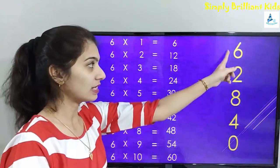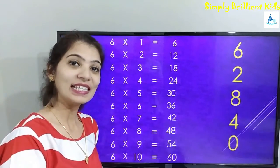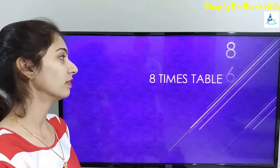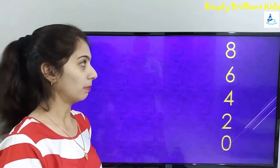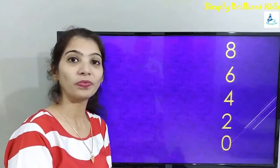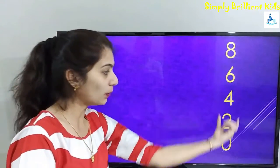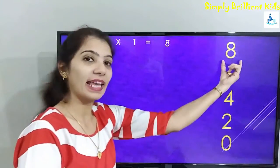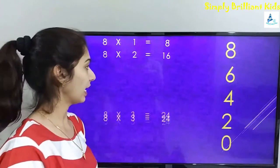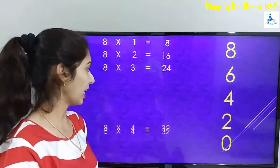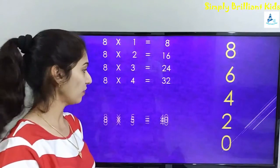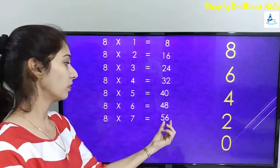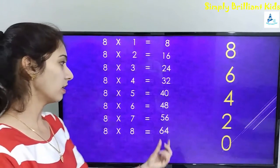Now let's learn eight times table. Here you need to remember the series: 8, 6, 4, 2, 0. That is the descending order of the even numbers. Eight ones are eight, eight twos are sixteen, eight threes are twenty-four, eight fours are thirty-two, eight fives are forty, eight sixes are forty-eight, eight sevens are fifty-six, eight eights are sixty-four, eight nines are seventy-two, eight tens are eighty.